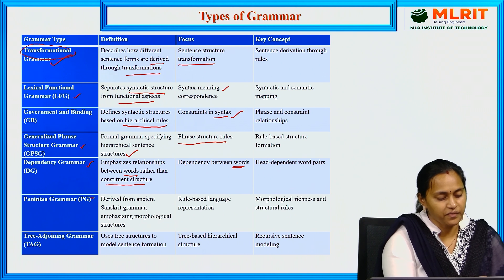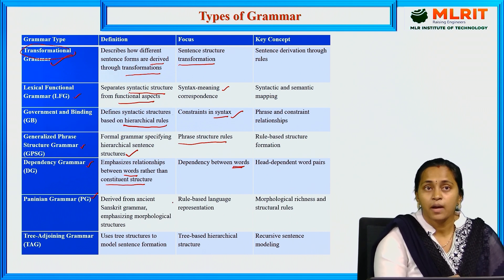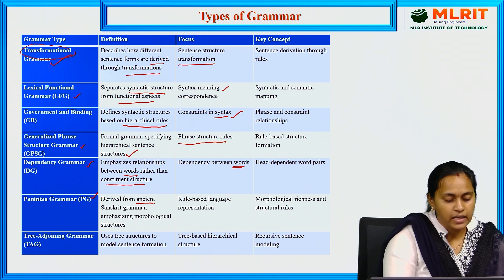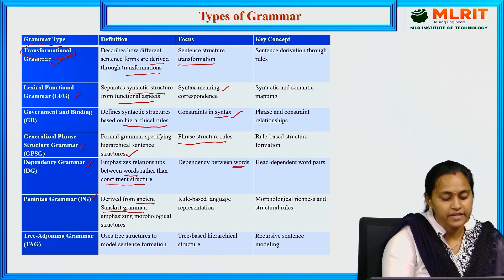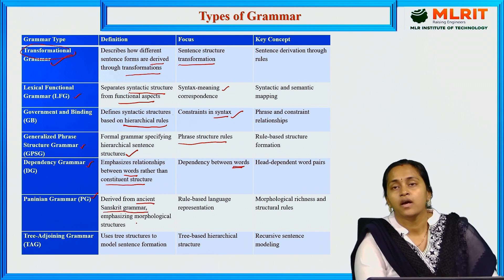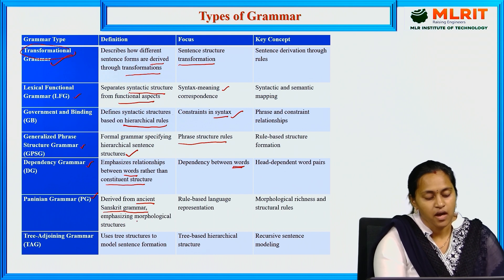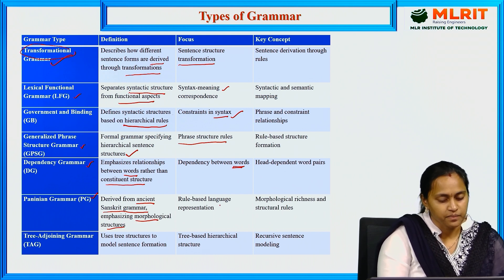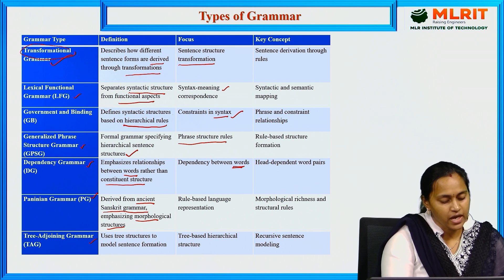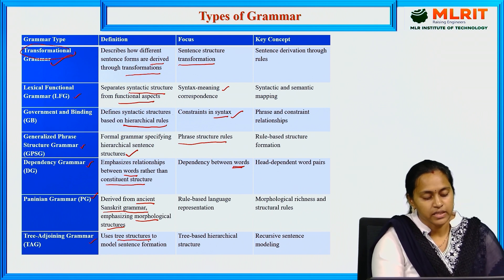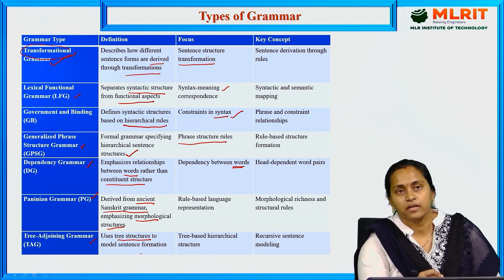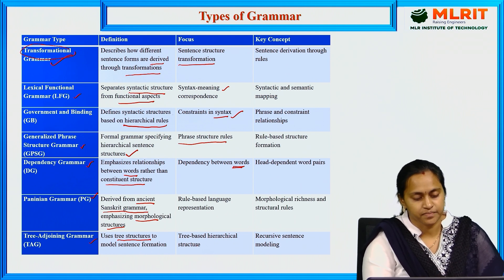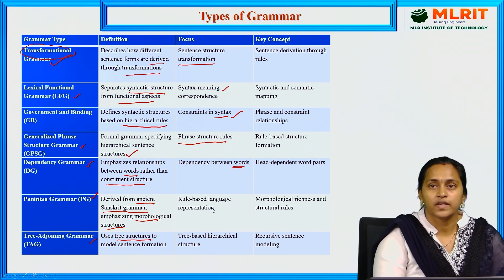Paninian grammar, or Paninian language model, is derived from ancient Sanskrit grammar. It is basically a morphological structure. Tree-adjoining grammar deals with tree structures — we can derive sentences in the form of tree structures.